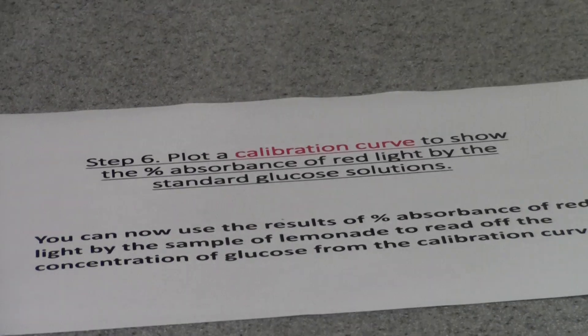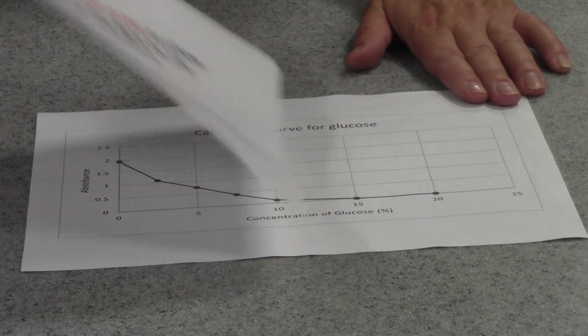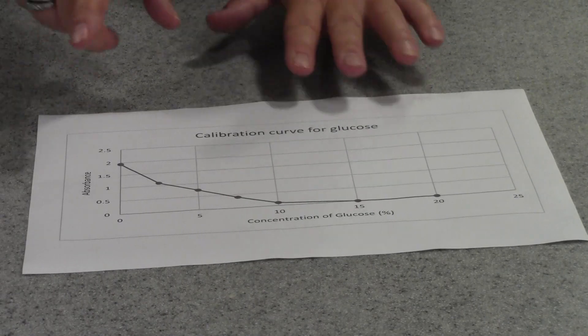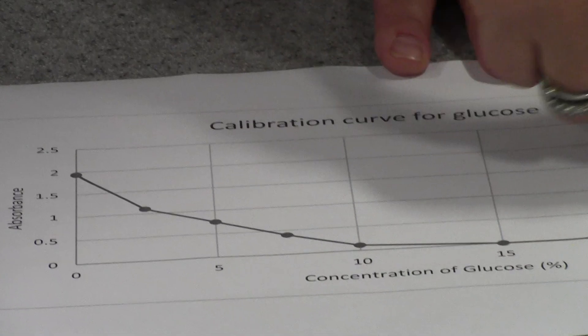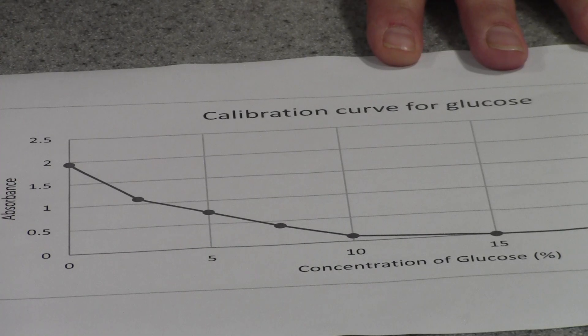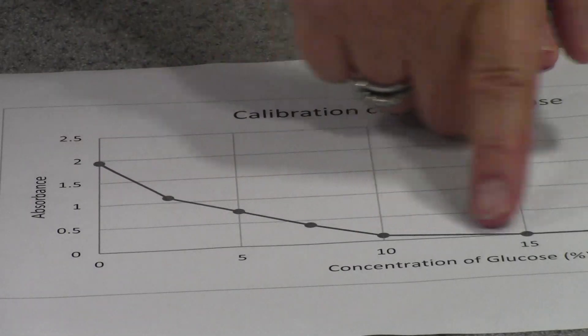So here I have a calibration curve that I produced earlier. Notice you've got concentration of glucose, the standard glucose concentrations, across the x-axis and up here you've got the percentage absorption of red light or absorbance and we've plotted this as you can see by joining the points up.